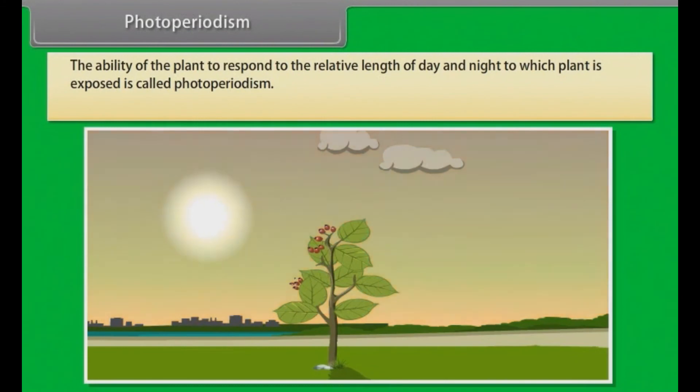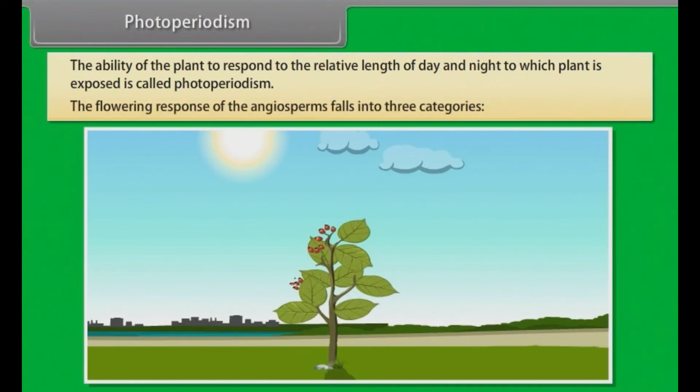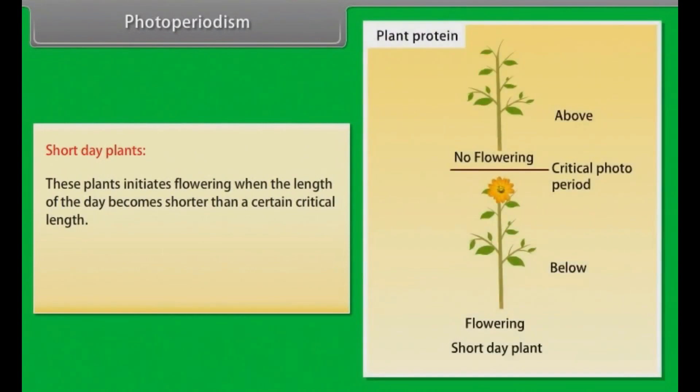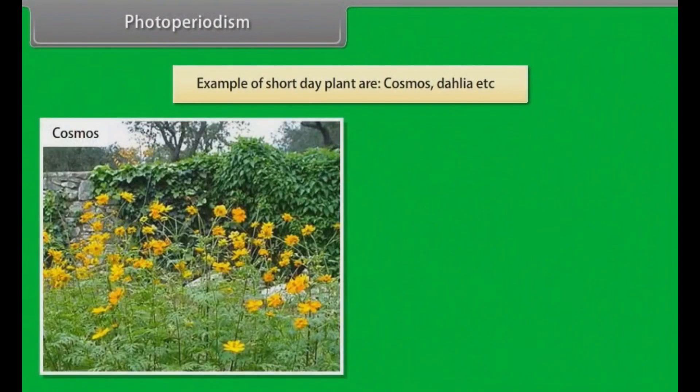Photoperiodism. The ability of plants to respond to the relative length of day and night to which the plant is exposed is called photoperiodism. The flowering response of the angiosperms falls into three categories. Short day plants: These plants initiate flowering when the length of the day becomes shorter than a certain critical length. If these plants are exposed for the length greater than the critical length, then they will remain vegetative. Examples of short day plants are Cosmos, Dahlia etc.